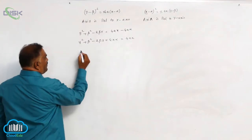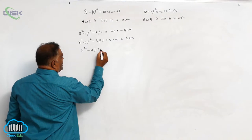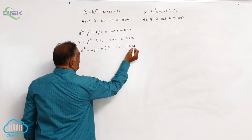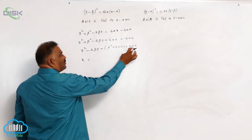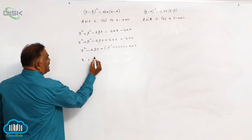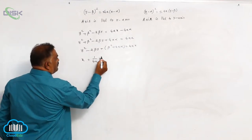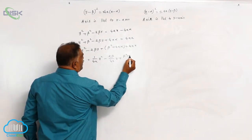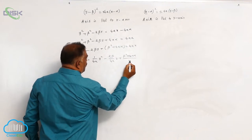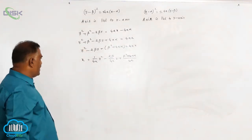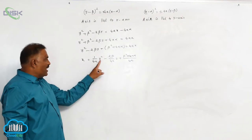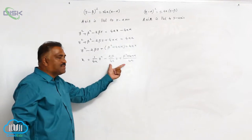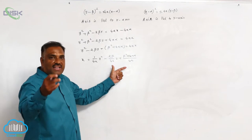Reading out this equation: y² - 2βy + β² + 4aα = 4ax. Now, x equals — divide throughout by 4a — giving: x = (1/4a)y² - (2β/4a)y + (β² + 4aα)/4a. You can see clearly that x is expressed with a y² term, a y term, and a constant. That means the right-hand side is a quadratic in y.